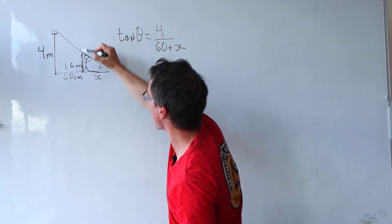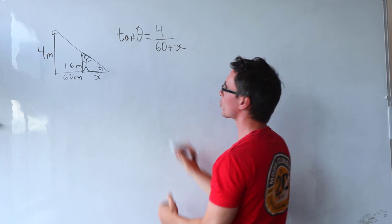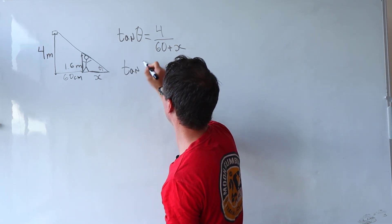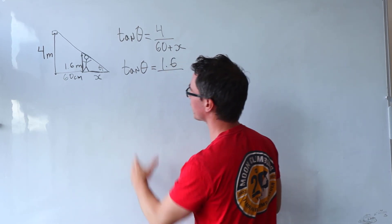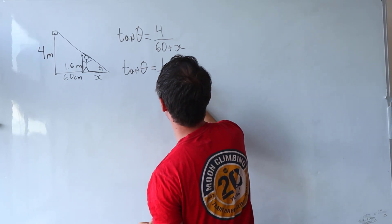But also, if we consider this smaller triangle, we can also see that tan of theta will be given by this opposite which is just 1.6, divide that by x.